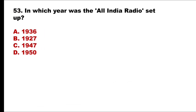Question 53: In which year was All India Radio set up? The answer is option E, 1936.